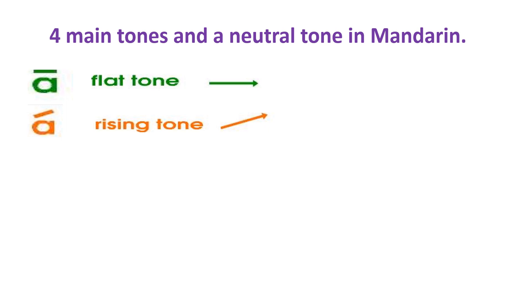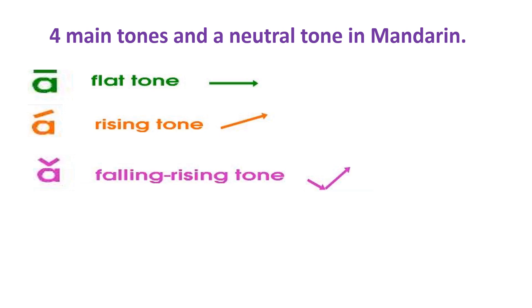The third tone is called the falling-rising tone. So you need to read it falling then rising, like this: A.